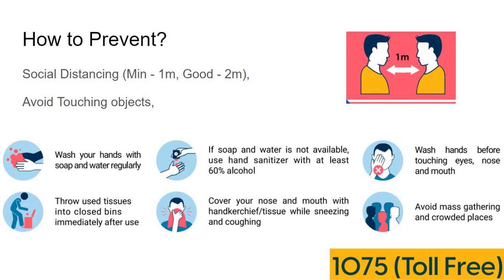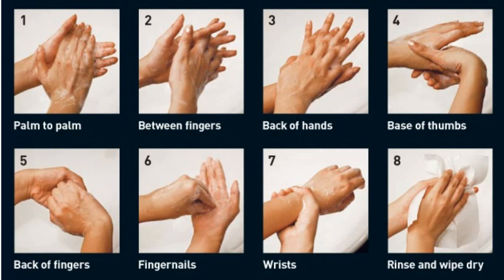We should avoid touching our eyes, nose, and mouth. We should throw used tissues into the dustbin immediately and use handkerchiefs or tissue paper while coughing so we do not disseminate the virus onto surfaces. Avoid mass gatherings and crowded places. The steps of hand washing are: step 1 — palm to palm; step 2 — between the fingers; step 3 — back of the hands; step 4 — base of the thumbs; step 5 — back of the fingers; step 6 — fingernails; step 7 — rest. Then rinse and wipe dry using fresh tissue paper.